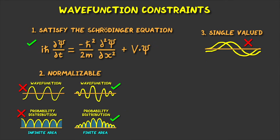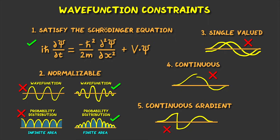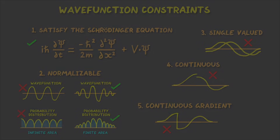Thirdly, the wave function must be single valued. Also it must be continuous, so have no breaks in it. And the slope of the wave function must be continuous, so no discontinuities in the gradient — like this. So those are the conditions quantum wave functions have to meet.